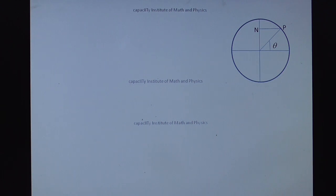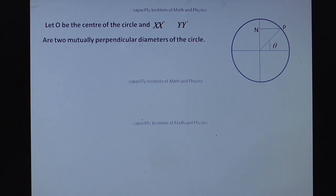Let O be the center of the circle. X, X dash and Y, Y dash are the perpendicular diameters of the circle. Let O be the center. Now this is X, X dash, let it is Y, Y dash be two mutual perpendicular diameters of the circle.